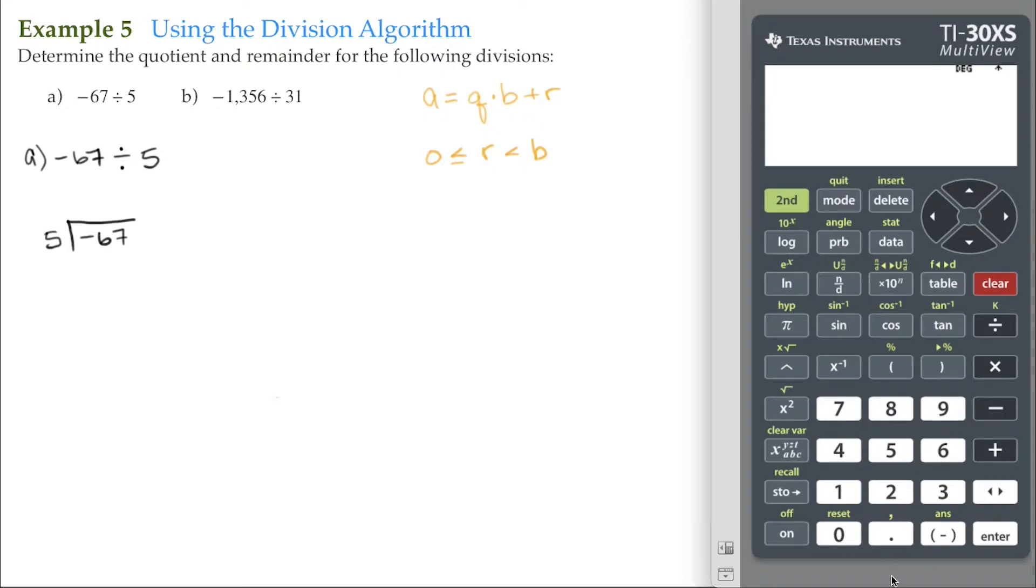On our calculator, here's the negative key. It's at the bottom, enclosed in parentheses. Most scientific calculators have a negative key that looks similar to this. So I'm going to enter negative 67 divided by 5.